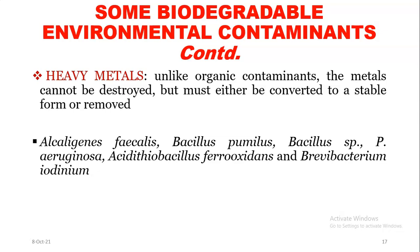Heavy metals cannot be destroyed but must either be converted to a more stable form or removed. Examples of microorganisms that can convert heavy metals to a more stable form or remove them are Bacillus, Brevibacterium, Acidithiobacillus, and Bacillus species.